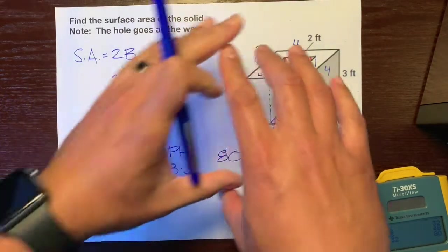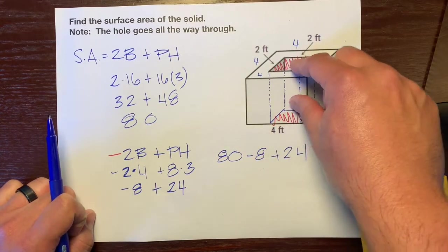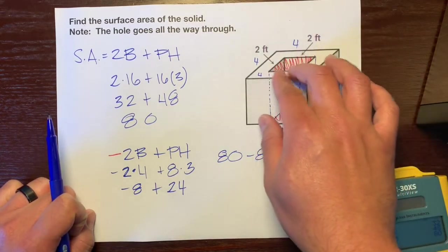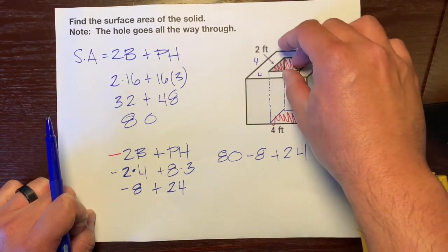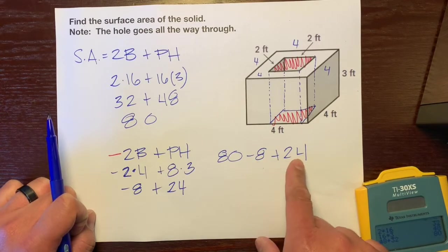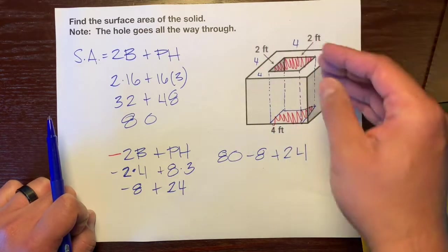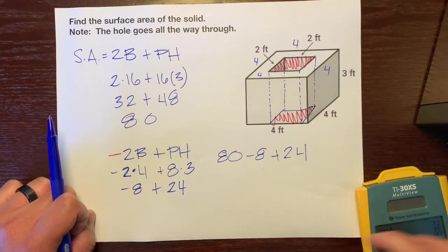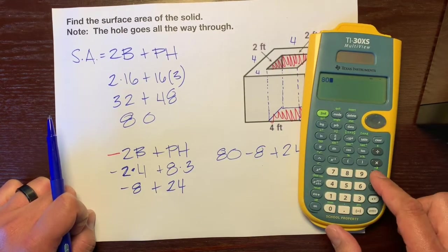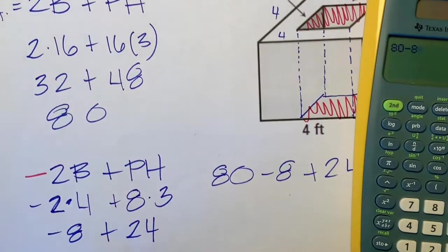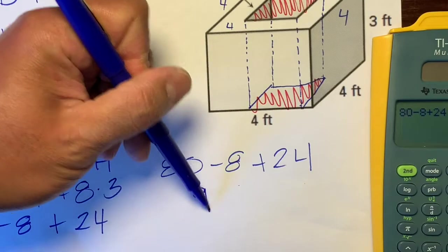We have the entire surface area, which is 80. We're taking away 8 unit squared because of these two here—this square is taken away, this square is taken away. But we're adding 24 because that inner surface on the inside, when the hole goes all the way through, creates a new surface. Now let's combine all three of these: 80 minus 8 plus 24 is 96. That's our final answer.